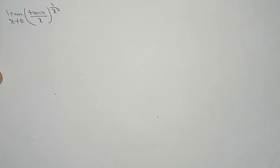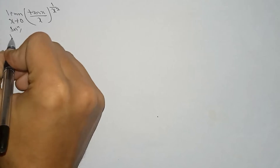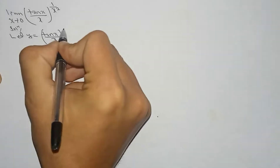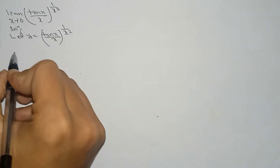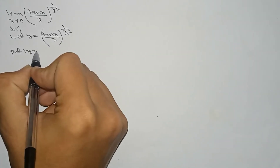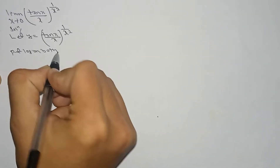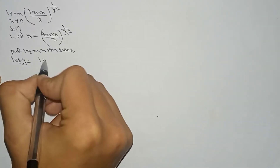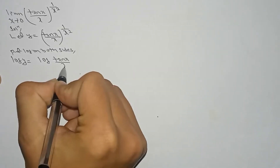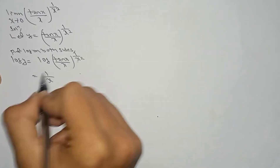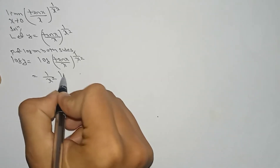Here is the question: limit x tends to 0 of (tan x / x)^(1/x²). For the solution, let y equal (tan x / x)^(1/x²). After this, put log on both sides, then we get log y equal to log(tan x / x)^(1/x²), so the power 1/x² is brought down.